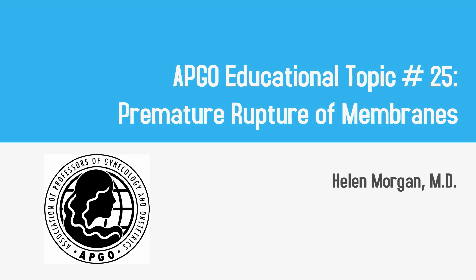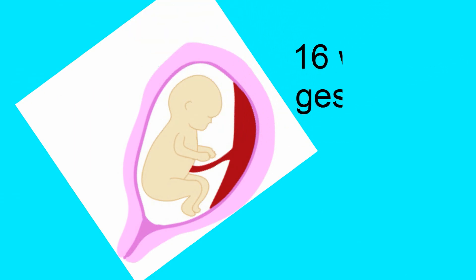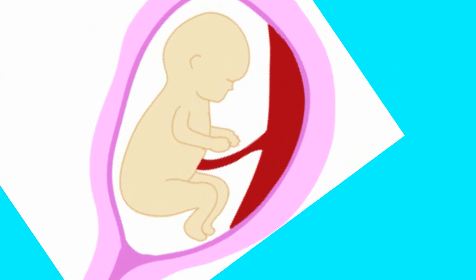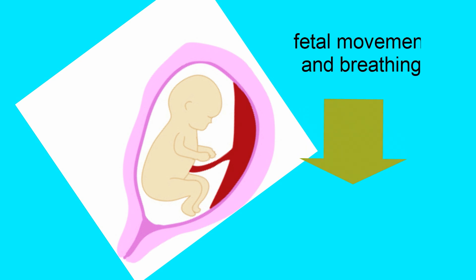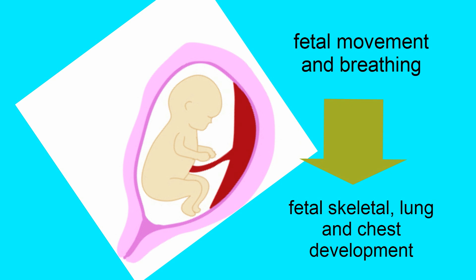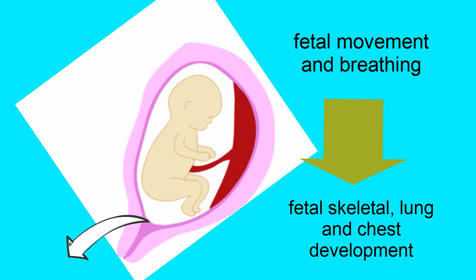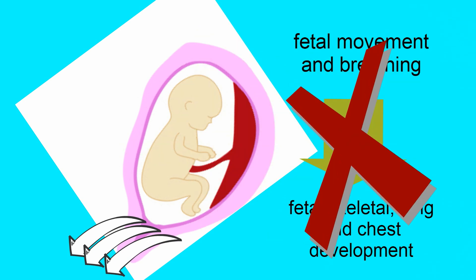APCO educational topic number 25: premature rupture of membranes. Amniotic fluid starts to be continuously produced at approximately 16 weeks gestation, and is primarily dependent on fetal urine production. Amniotic fluid allows for fetal movement and breathing, which are important for fetal skeletal, lung, and chest development. Decreased or absent amniotic fluid can lead to compression of the umbilical cord and decreased placental flow. Disruption of the fetal membranes leads to a loss of these protective effects and the developmental roles of amniotic fluid.